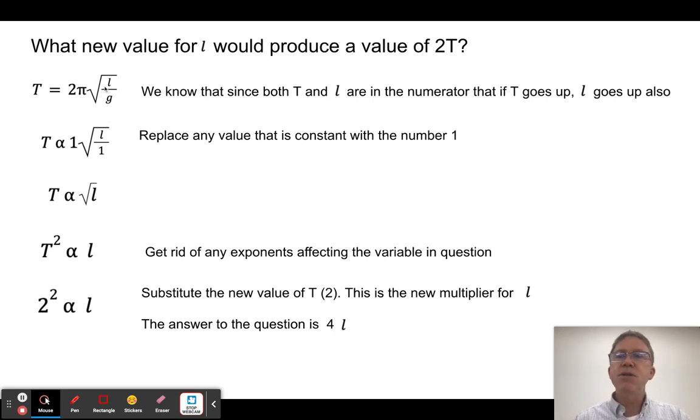And we know that both T and l are in the numerator. So it's going to be a direct relationship. That means if one goes up, the other one goes up too. Now here's the next step that a lot of students seem to have a little bit of trouble getting used to at first. And that is, notice I'm switching over from an equal sign to a proportionality.